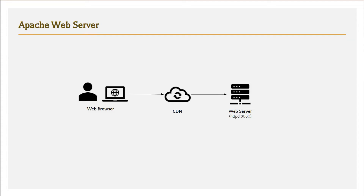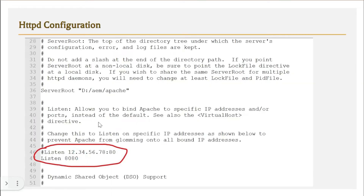In the web server, there is a daemon process called HTTPD. This HTTPD listens on port 8080, or whatever port it has been configured to listen on. It keeps monitoring incoming requests on that port and whenever a request comes in, the daemon process processes it. This daemon process uses a configuration file known as httpd.conf, found in the Apache root config folder.